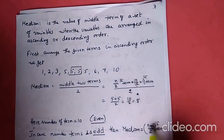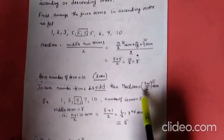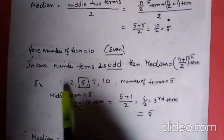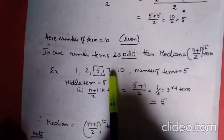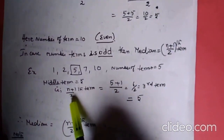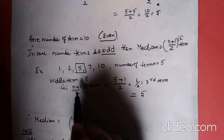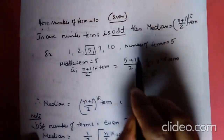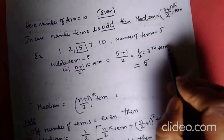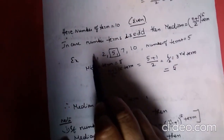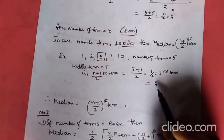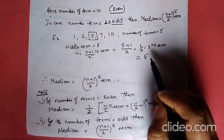Suppose the number of terms is odd. For example: 1, 2, 5, 7, 10 — there are 5 numbers, and 5 is odd. So the formula is (n+1)/2. Here, 5+1 = 6, divided by 2 = 3. So the third term is the median. The third term is 5. Therefore, 5 is the median.